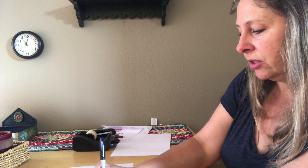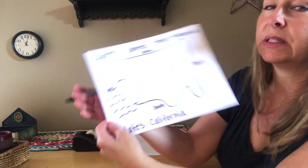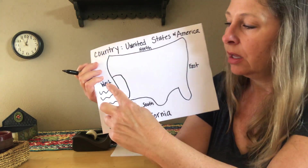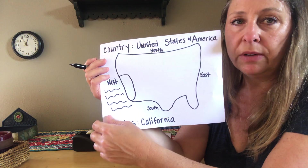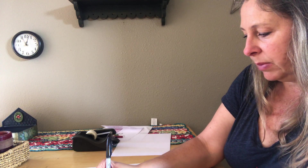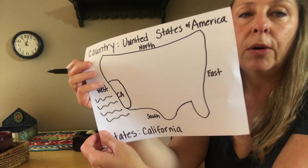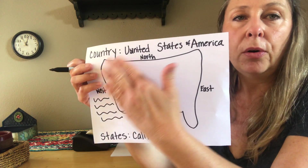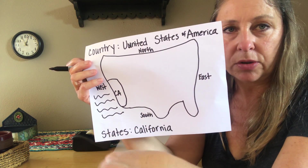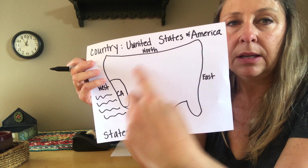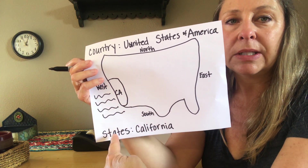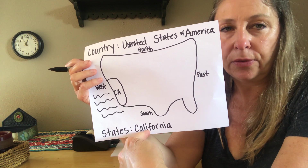If you look on a map you will find our piece of the puzzle — California. California is a large state in our country and it is all the way over here in the west up against the Pacific Ocean. I hope you've had a chance to dip your toes in the Pacific Ocean. We're pretty lucky to live right next to the ocean. We abbreviate California with a big C and a big A.